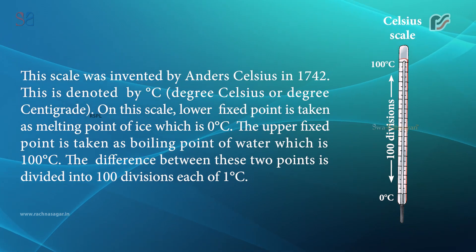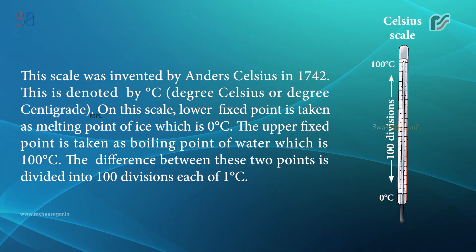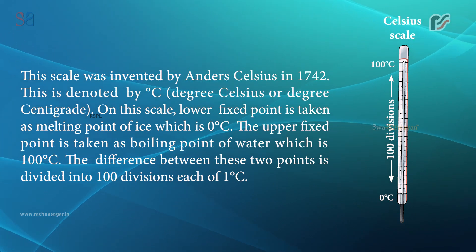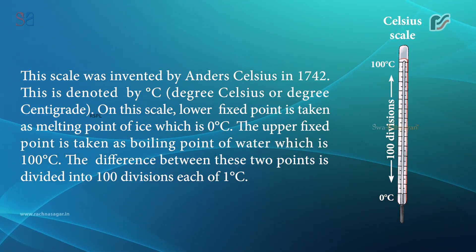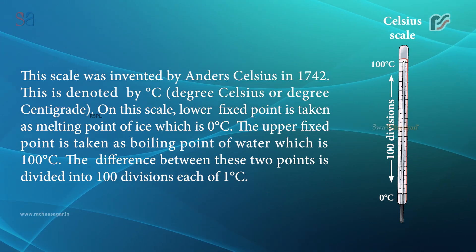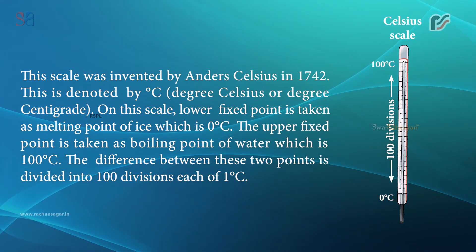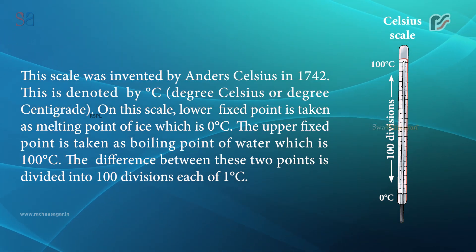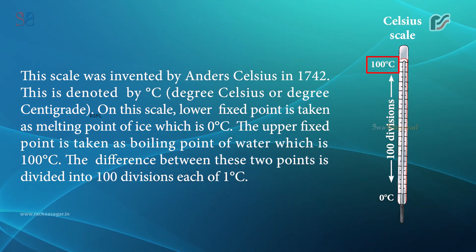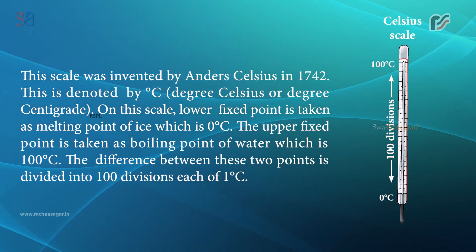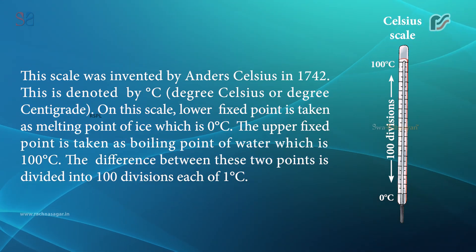The Celsius scale was invented by Anders Celsius in 1742. It is denoted by degree Celsius or degree centigrade. On this scale, the lower fixed point is the melting point of ice, which is 0 degree Celsius. The upper fixed point is the boiling point of water, which is 100 degree Celsius. The difference between these two points is divided into 100 divisions, each of 1 degree Celsius.